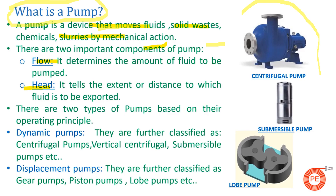There are two important factors or components which help in deciding the pump selection: one is flow and another is head. Flow means what is the minimum amount of fluid that is required to be transferred or pumped from one place to another. Head is basically the pressure at which we want our fluid to reach at a particular point. These two components are used to define and select the pump.